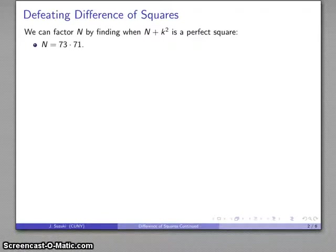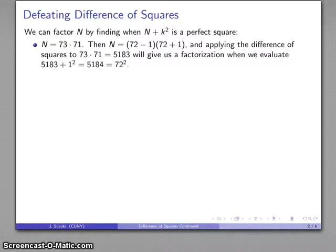So for example, let's say n is 73 times 71. Well, the thing we notice here is that that means that n is going to be 72 minus 1 times 72 plus 1, and rearranging that, working our difference of perfect squares backwards, what that means is that this product, 73 times 71,